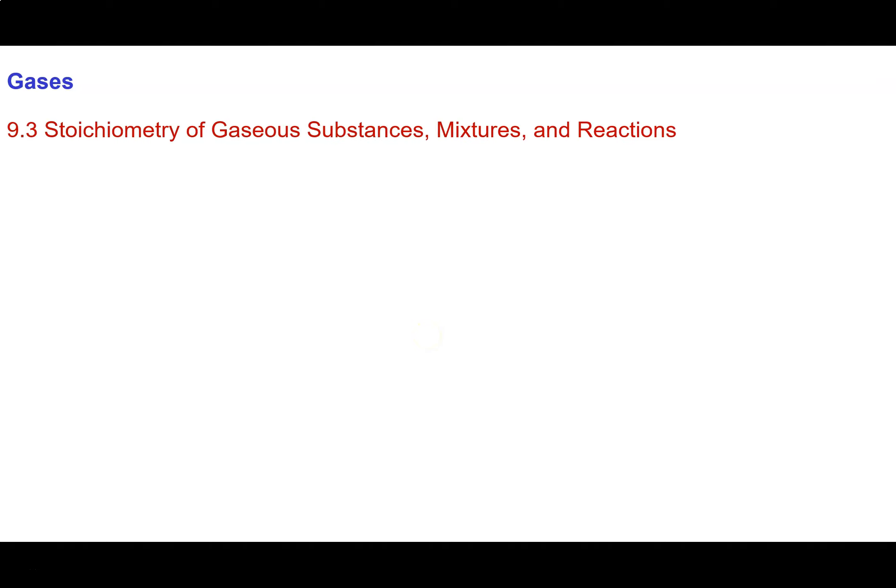So now we understand a little bit about how the pressure, volume, temperature, and amount of a gas are related to one another. We're going to do some calculations now on the amounts of gaseous substances in chemical reactions and mixtures.